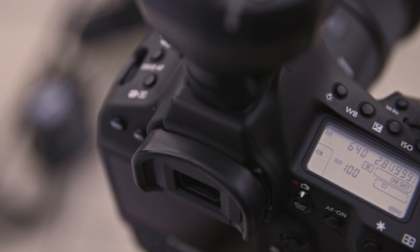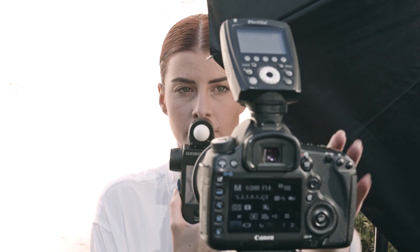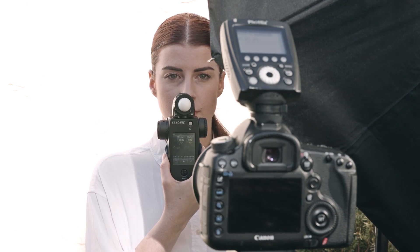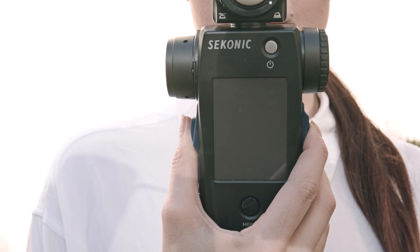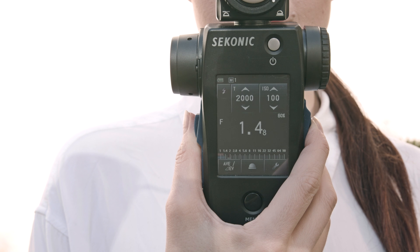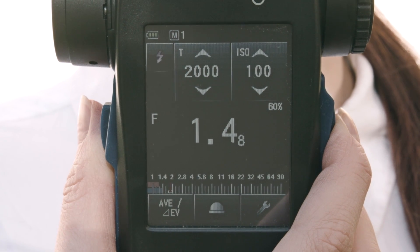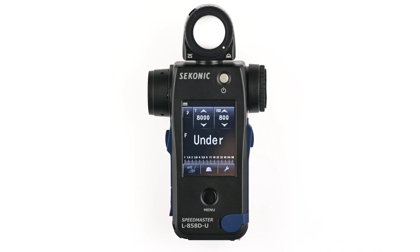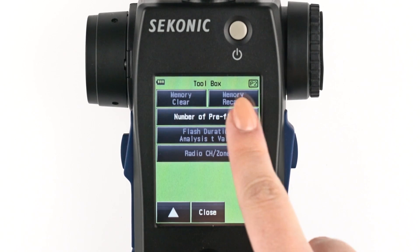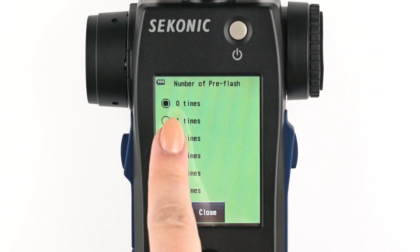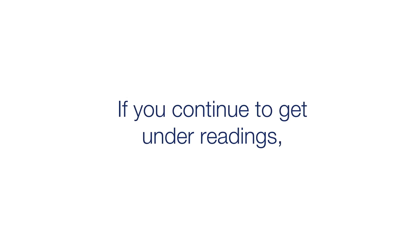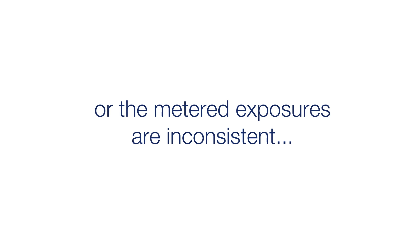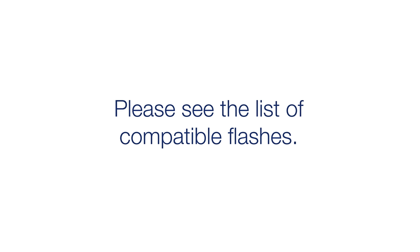Using your camera with your desired shutter speed and ISO set, press the measure button on your meter. Fire your HSS-enabled lights from your camera and the L858 will give you your HSS measurement. If you are getting an under reading, you may need to enter the number of pre-flashes your strobe is using. You can set the number of pre-flashes by going to the toolbox, page two, then select the number of pre-flashes and close. If you continue to get under readings or the metered exposures are inconsistent, please see the list of compatible flashes.